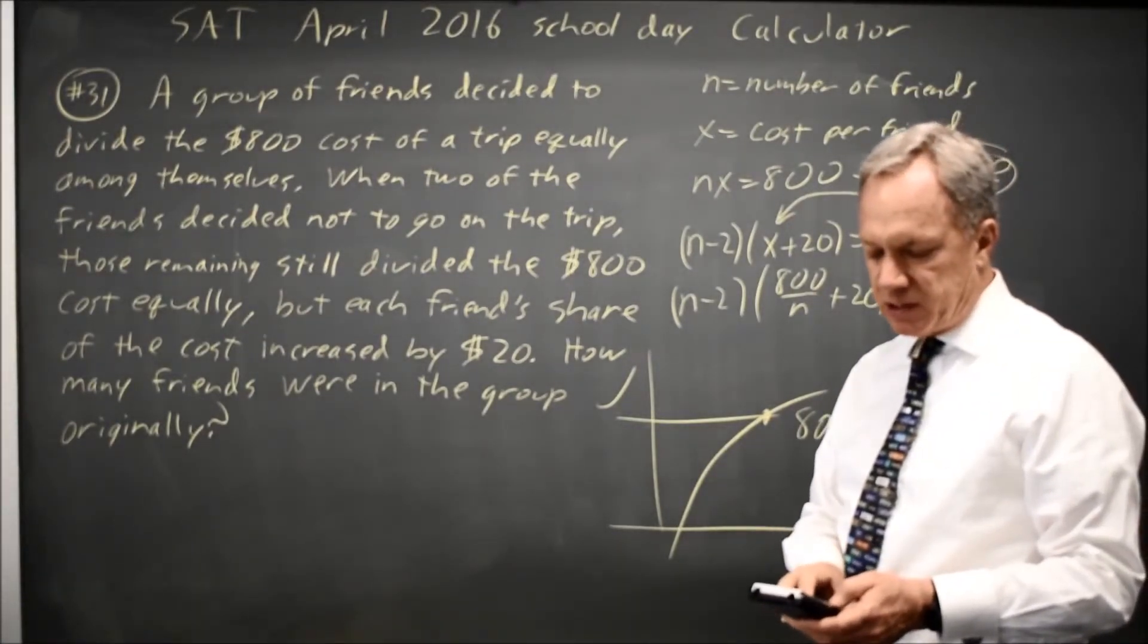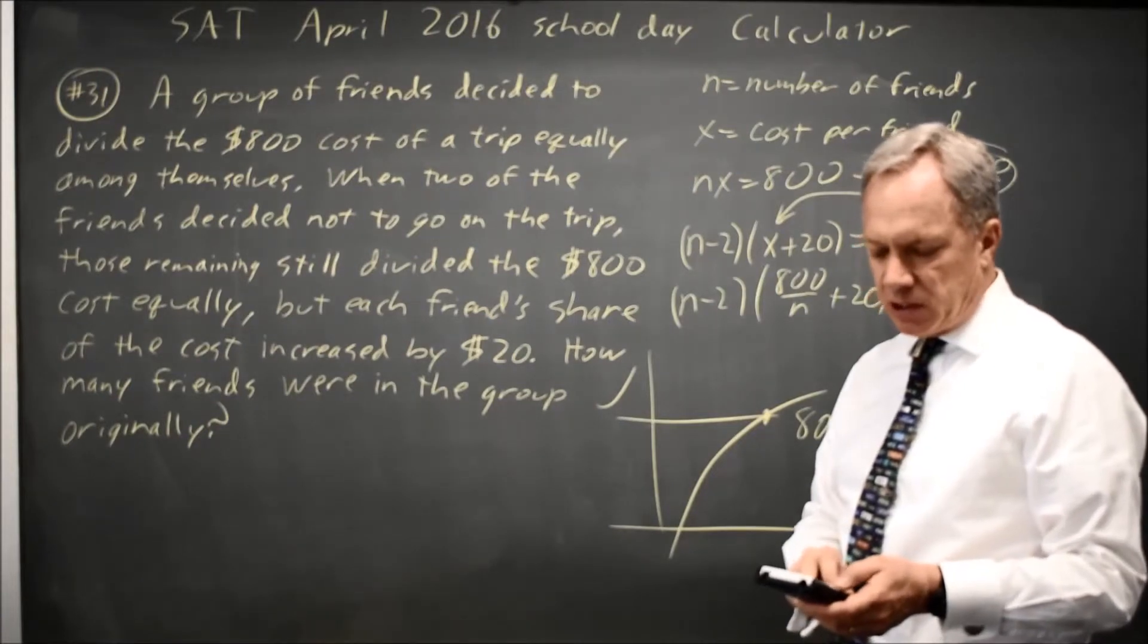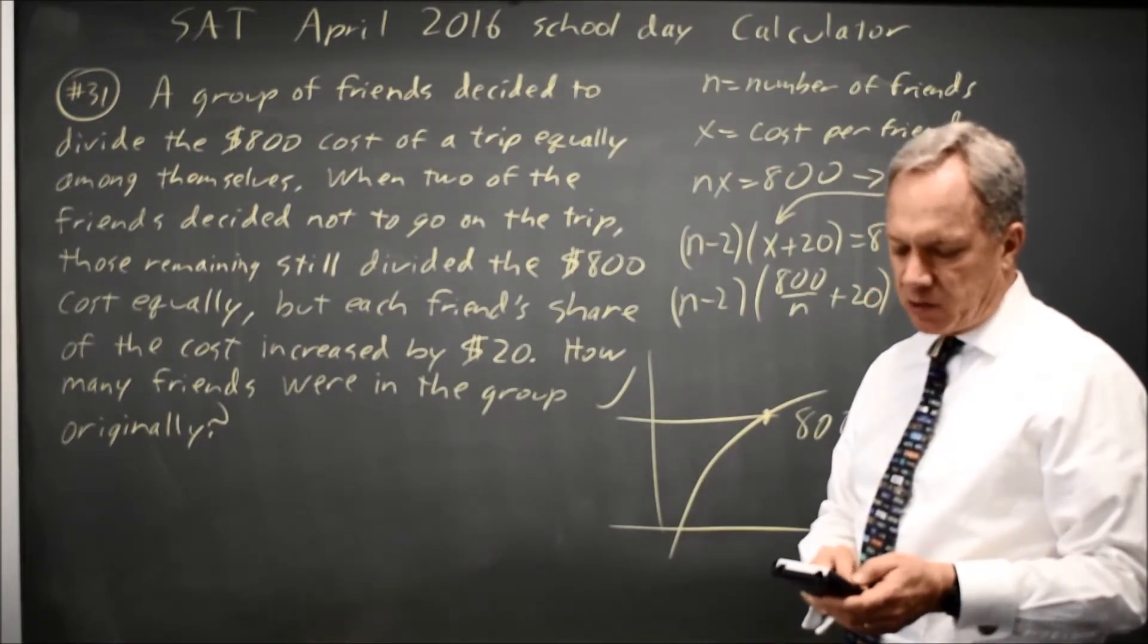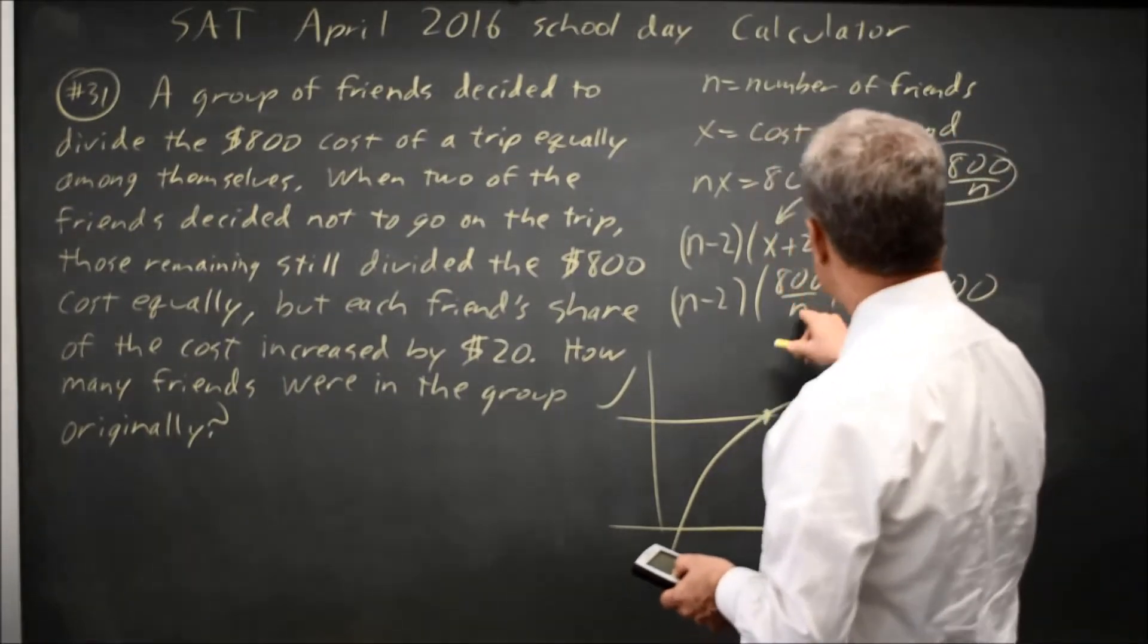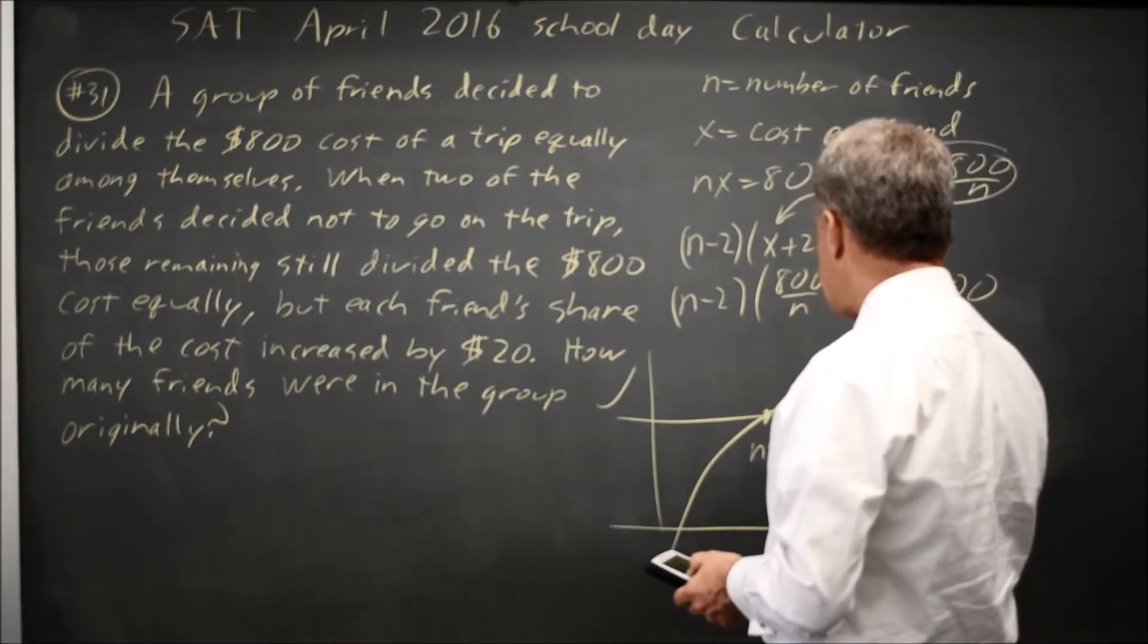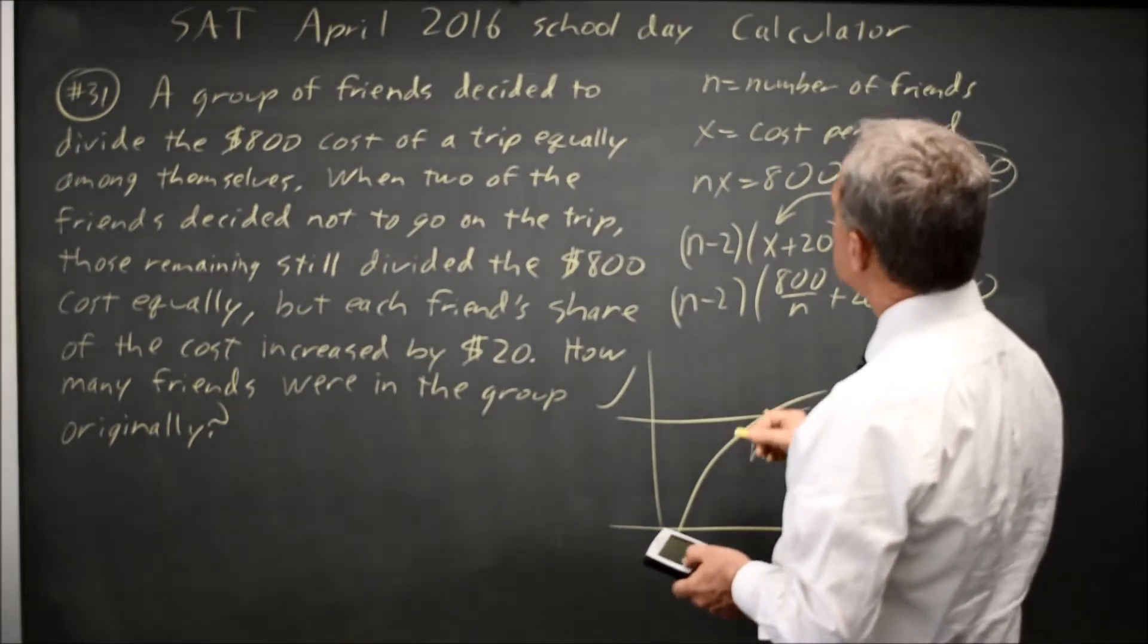That's second, and then the trace button for calculate. Choice 5 is intercept, and I hit enter three times, and it says x equals 10, but x is n. So n equals 10, where n is the number of friends originally.